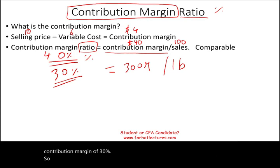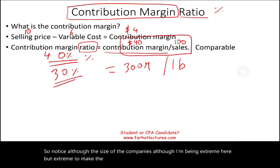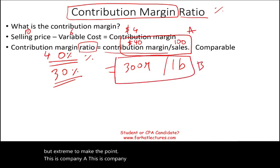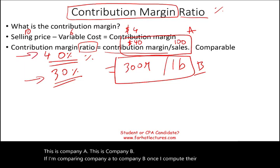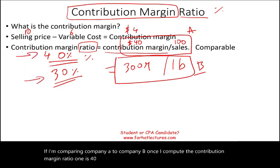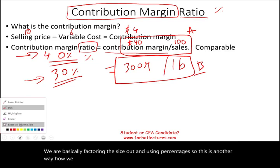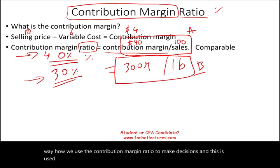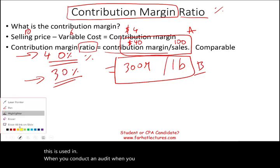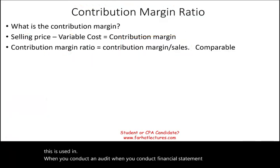Although the size of the companies is different — and I'm being extreme here to make the point — if I'm comparing company A to company B, once I compute their contribution margin ratio, one is 40% and one is 30%, then I can compare them. We are basically factoring the size out and using percentages. This is another way we use the contribution margin ratio to make decisions, and it's used when you conduct an audit or financial statement analysis.